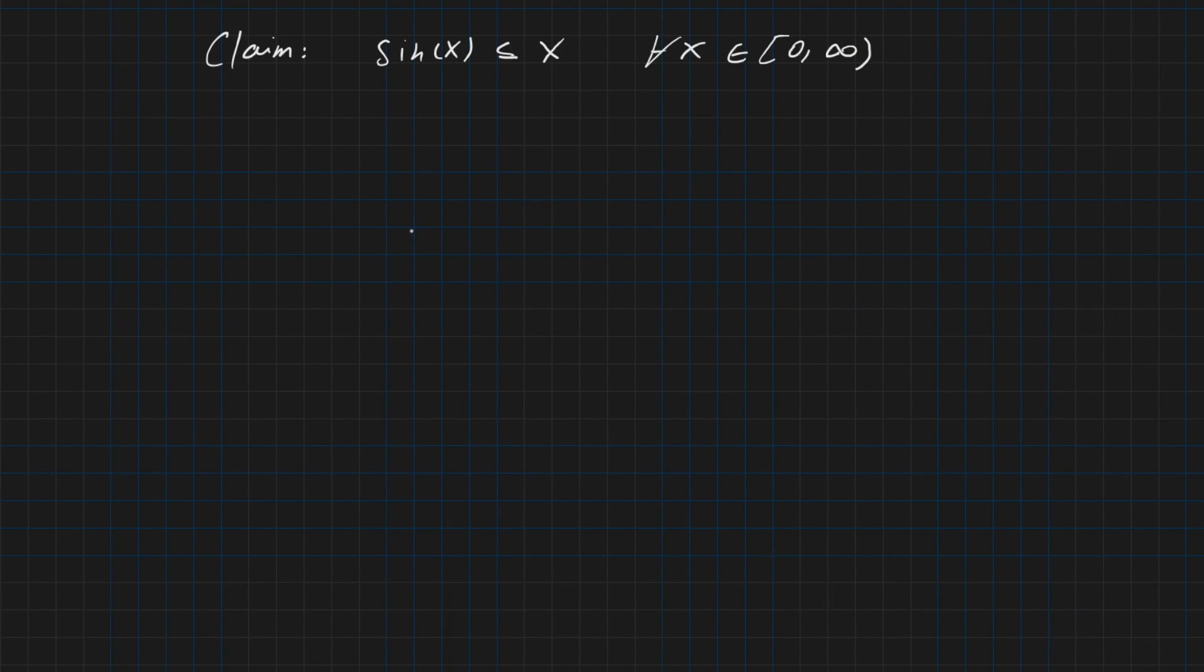Hello guys and welcome back to the channel. Today we are given the following task: We want to prove that sin(x) ≤ x for all x ≥ 0 from the real numbers.